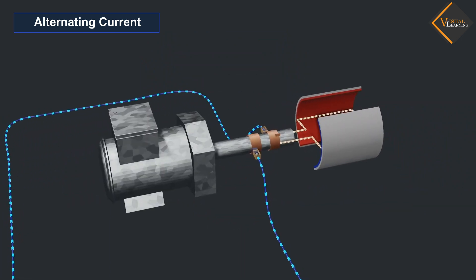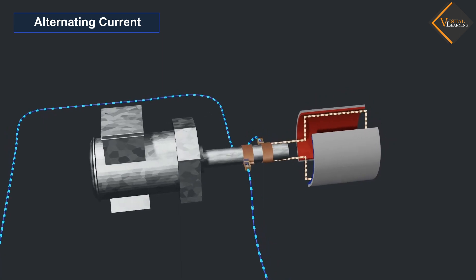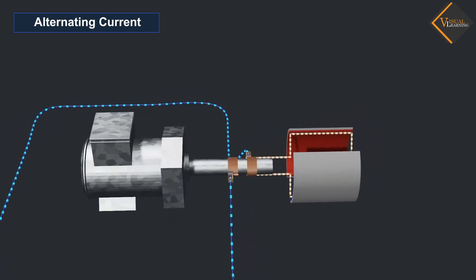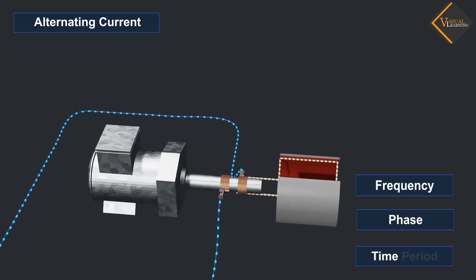To understand alternating current, you need to understand some related basic terms such as frequency, phase, and time period.